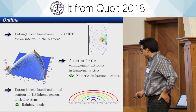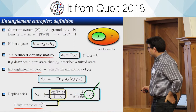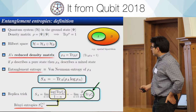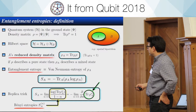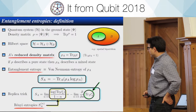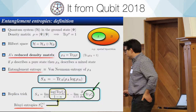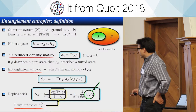This is a review slide just to give some definitions. We all know how to construct entanglement entropy. Here I will focus on spatial bipartition of the Hilbert space, and I will also discuss the Rényi entropies, which are defined in terms of the moments of the reduced density matrix.